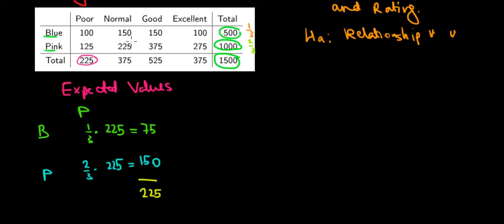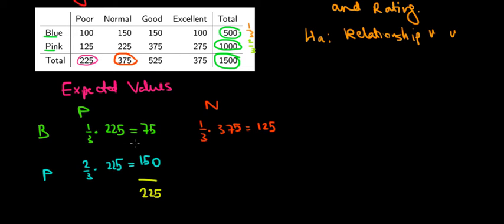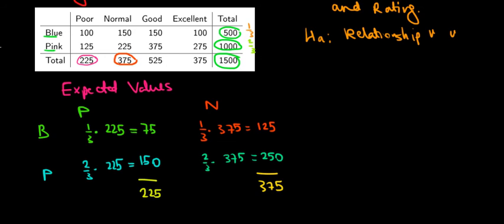Using the same logic, let's look at the expected values for packages with a normal rating. We expect a third of them to be blue: 1/3 out of 375 equals 125. For pink packages with a normal rating, it's 2/3 out of 375, which equals 250. The math works out again to the same total of 375.